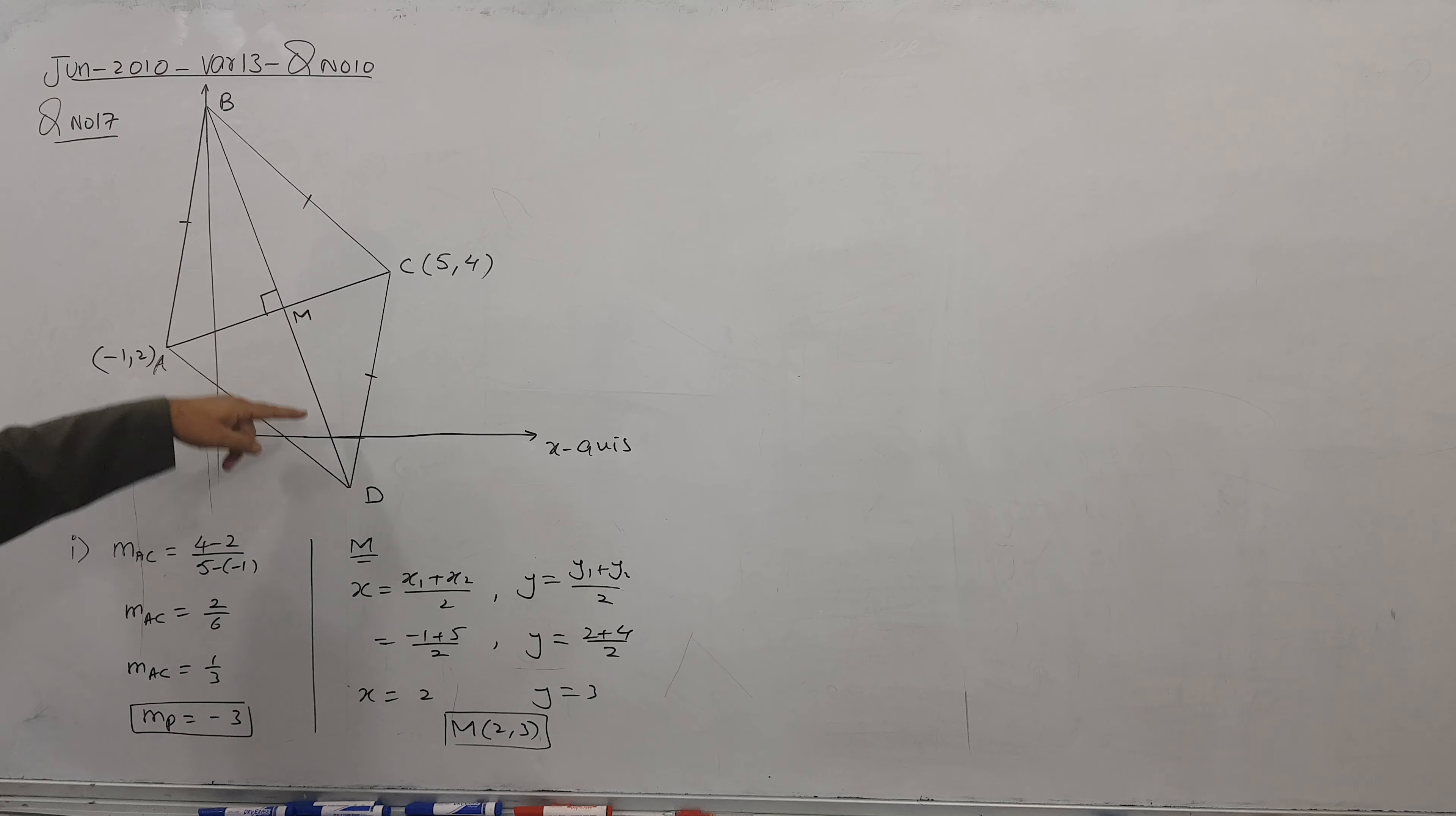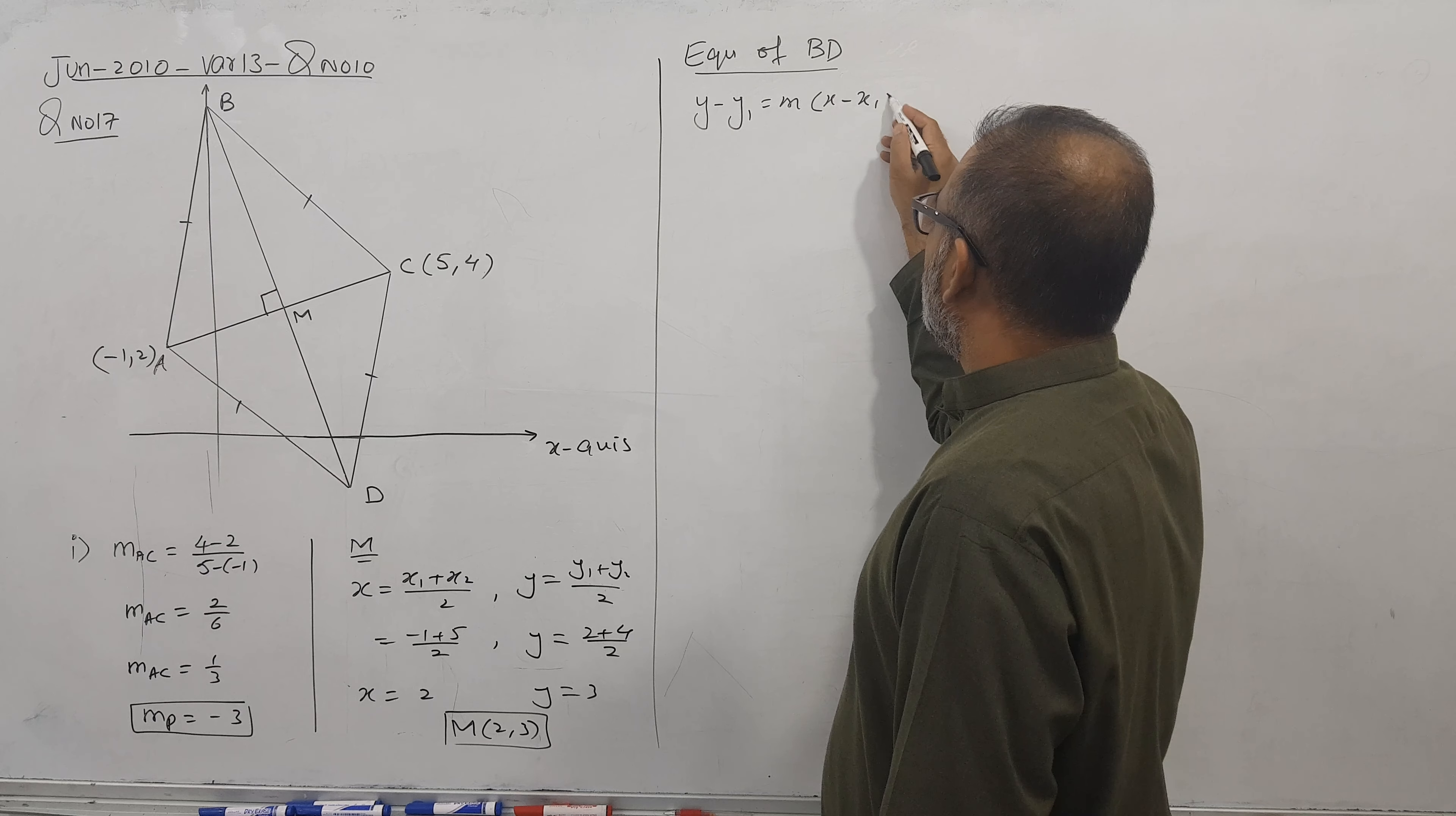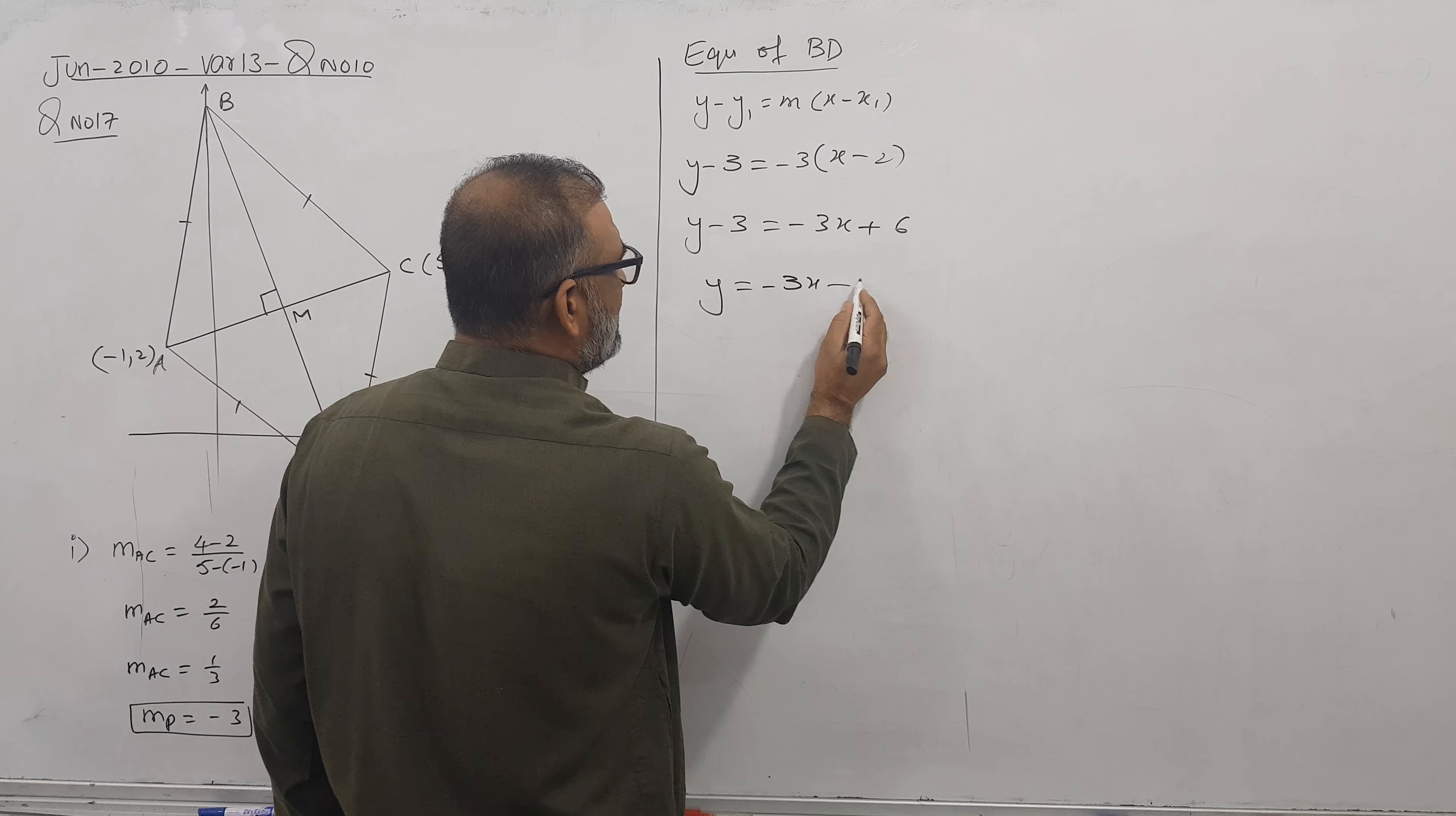I will use these two things and find the equation of the bisector line. I use this M and gradient is minus 3. So let's go for the equation of perpendicular bisector BD. Formula is y minus y1 equals M times x minus x1, and y1 is 3, x1 is 2, and M is minus 3. So alhamdulillah, y equals minus 3x plus 9.